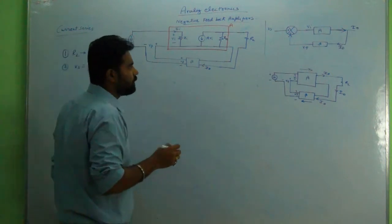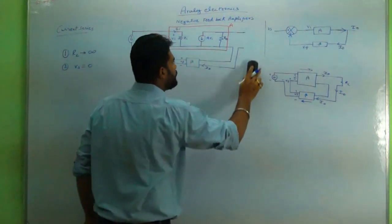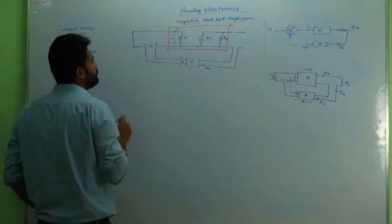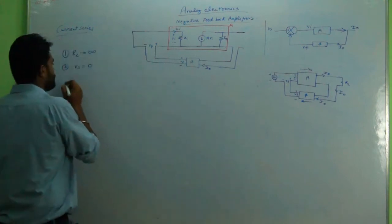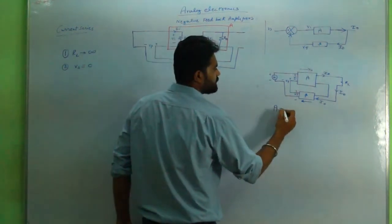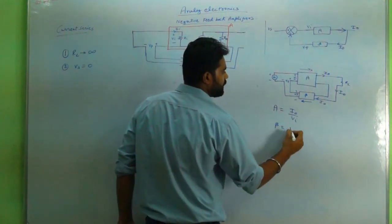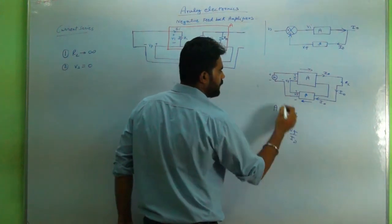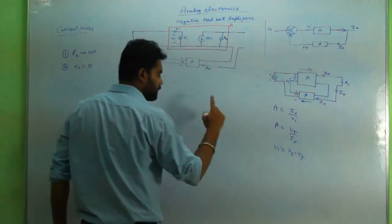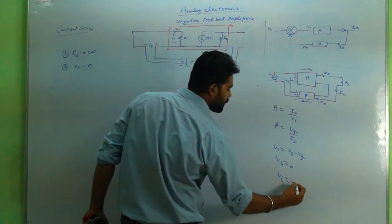If we implement both these things, then R_L is infinity and V_s is zero. The effect will be directly on V_s. A is given as i_naught upon v_i, and beta is given as v_f upon i_naught. Earlier v_i is equal to V_s minus v_f, so if V_s equals zero, then v_i equals minus v_f.